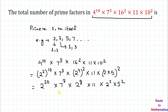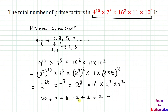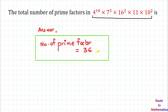We now count the powers. For 2: 20 plus 8 plus 1 plus 2 equals contributions; for 7: power 3; for 11: power 1; for 5: power 2. Adding up: 20 plus 3 is 23, plus 8 is 31, plus 1 is 32, plus 2 is 34, plus 2 is 36. So the total number of prime factors present in this number is 36.